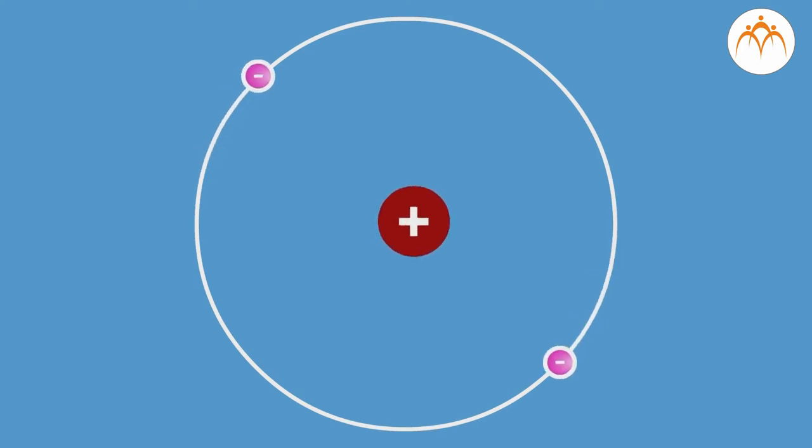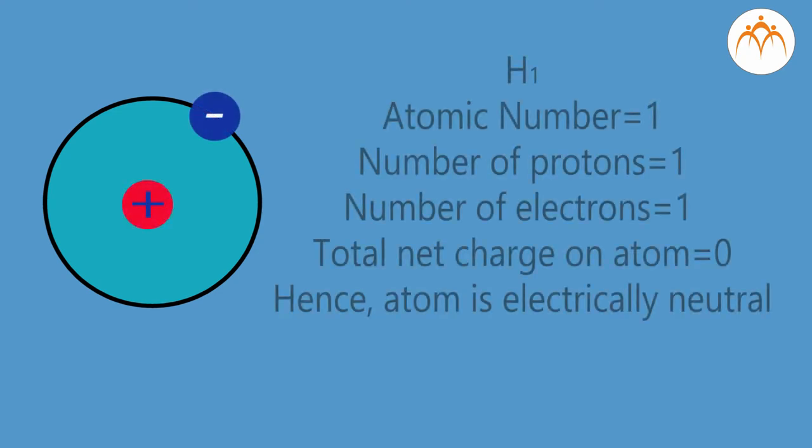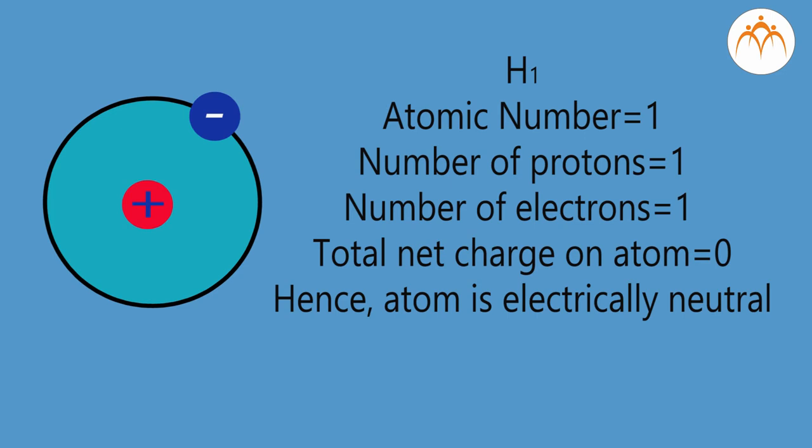There is a positively charged nucleus at the centre of an atom. The entire mass of the atom is concentrated at the centre in the nucleus. Negatively charged particles called electrons revolve around the massive positively charged nucleus. The total negative charge on all electrons is equal to the total positive charge on the nucleus. This way atom continues to be neutral.